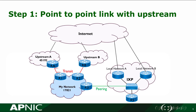Let's have a look at Step 1, which is the configuration of the point-to-point link with the upstream. In this diagram we're going to configure the point-to-point link from R1 to RA. My AS number is 17821 and my Upstream A's AS number is 45192.